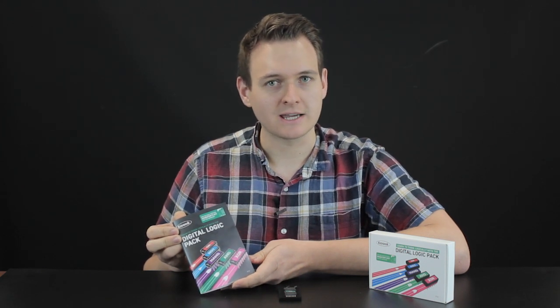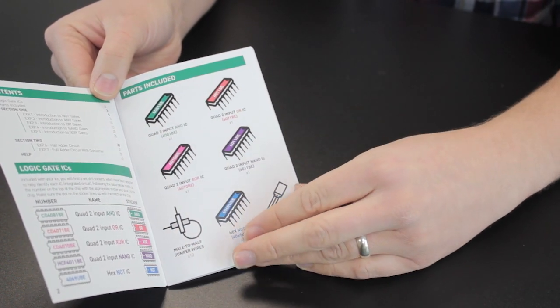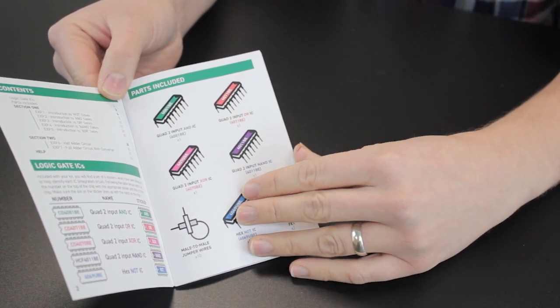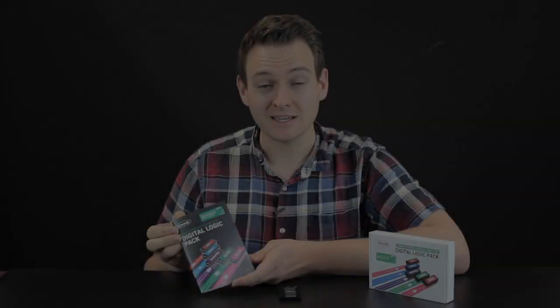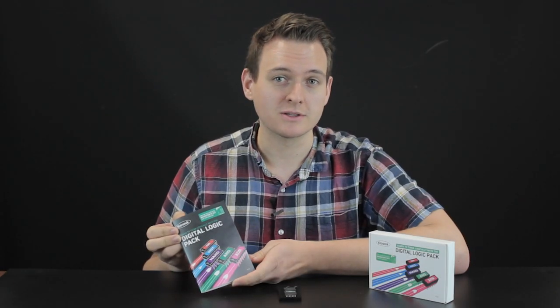The booklet that comes with the Digital Logic Pack contains seven different experiments. The first five take you through the basics of a NOT gate, an AND gate, an OR gate, a NAND gate, and an XOR gate. These experiments cover the basic requirements for Digital Logic at Key Stage 3.